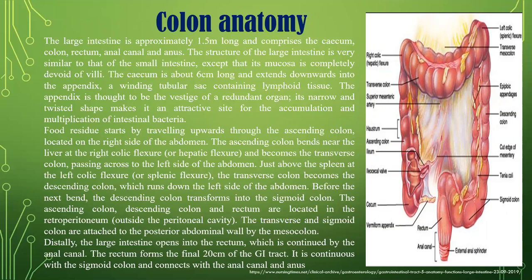The appendix is thought to be a vestigial redundant organ. Its narrow and twisted shape makes it an attractive site for accumulation and multiplication of intestinal bacteria. The rest of the intestine starts by trailing upward through the ascending colon on the right side of the abdomen. The ascending colon bends near the liver at the right colic flexure, or hepatic flexure, and becomes the transverse colon, passing across to the left side of the abdomen. Just above the spleen at the left colic flexure, the transverse colon becomes the descending colon. The descending colon transforms into the sigmoid colon. The ascending and descending colon and rectum are located in the retroperitoneum.